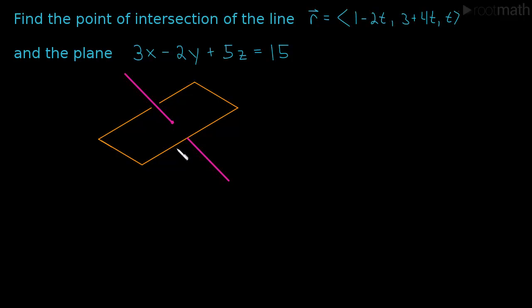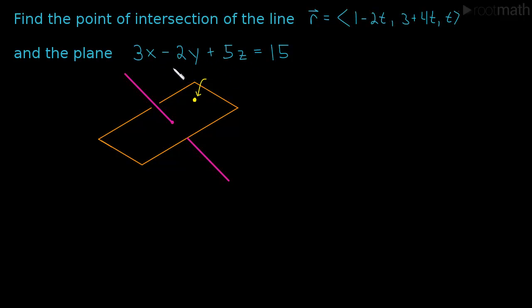It really just boils down to something simple: do you understand what it means to actually be a point in this plane? If this is a point, it means when I plug in the x-coordinate, the y-coordinate, and the z-coordinate, and do this multiplication and addition, I should end up with the number 15.